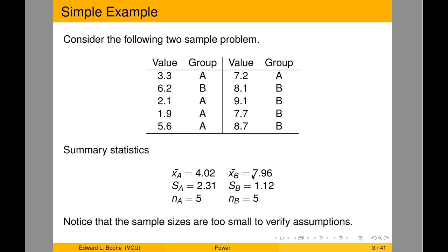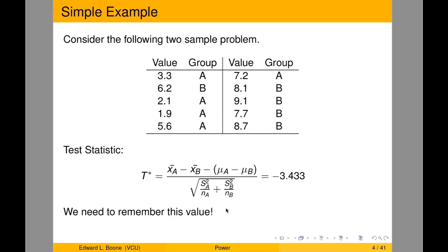This is our real data. Our x-bar is 4.02 for group A and 7.96 for group B, along with the standard deviations and sample sizes. If we run a two-sample t-test, this gives us our test statistic value. We are not going to look this up in a table — we just record this value, because we're going to use it to compare it against all the other possible randomizations.